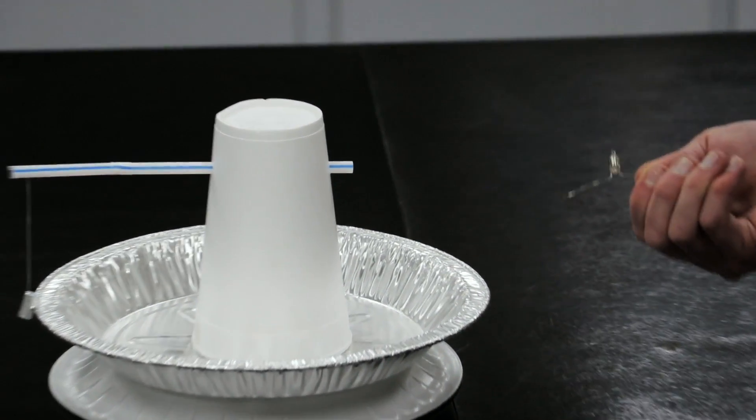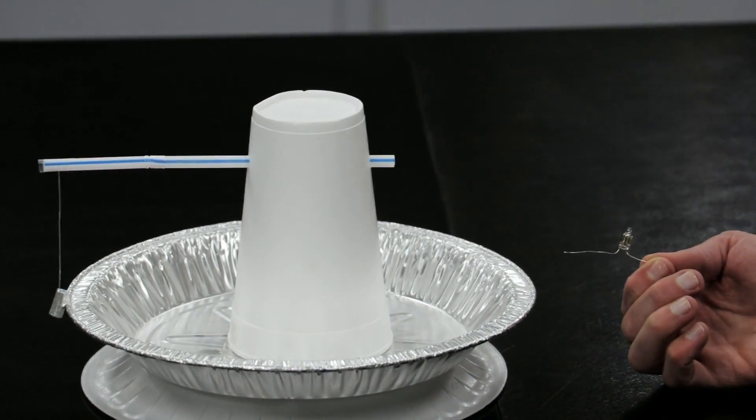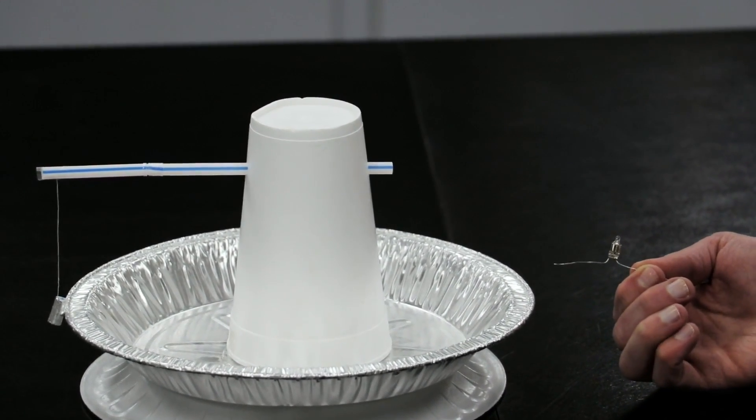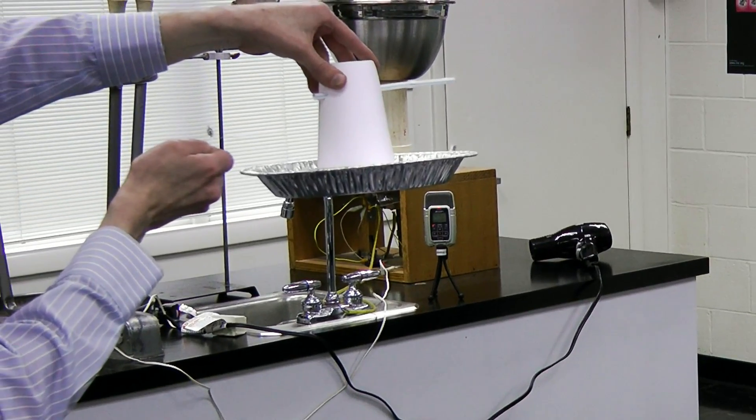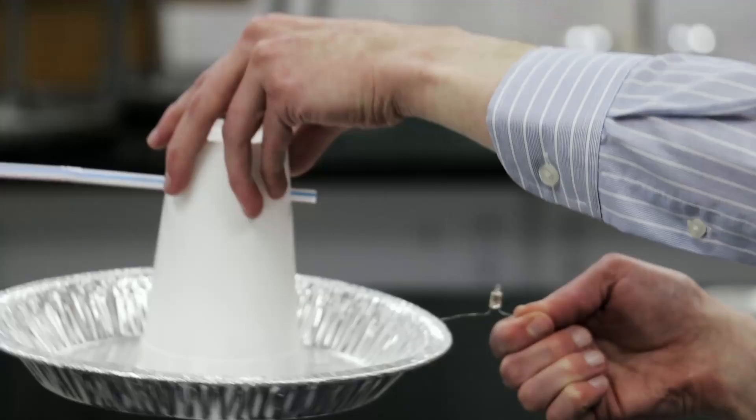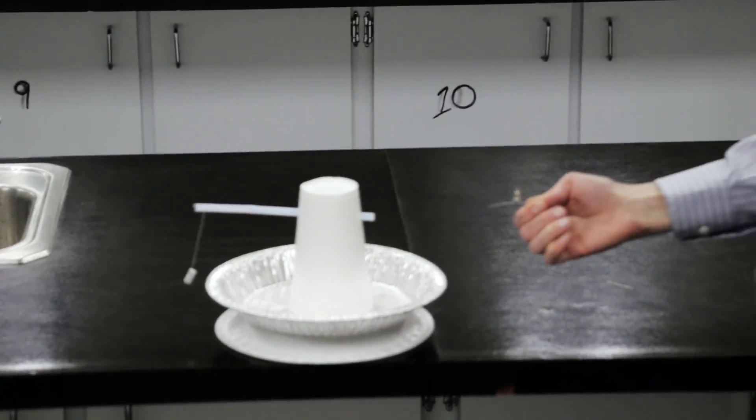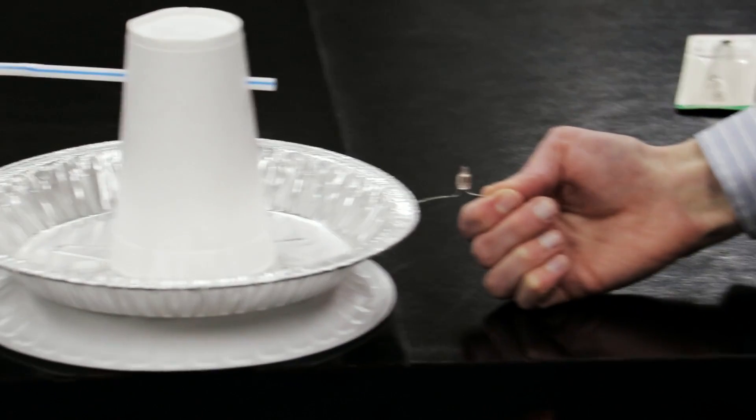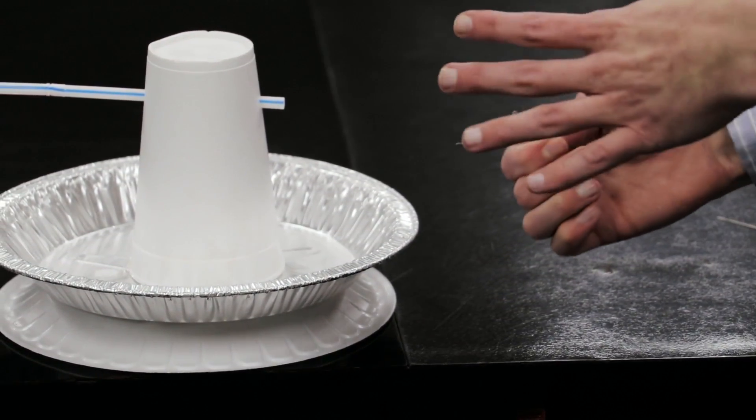Now this neon bulb has two tiny electrodes in it, and the negative electrode is the one that flashes. If you watch the neon bulb very carefully, when the plate is raised, the electrode next to my hand is the one that flashes. When the plate is lowered, the electrode next to the plate is the one that flashes.